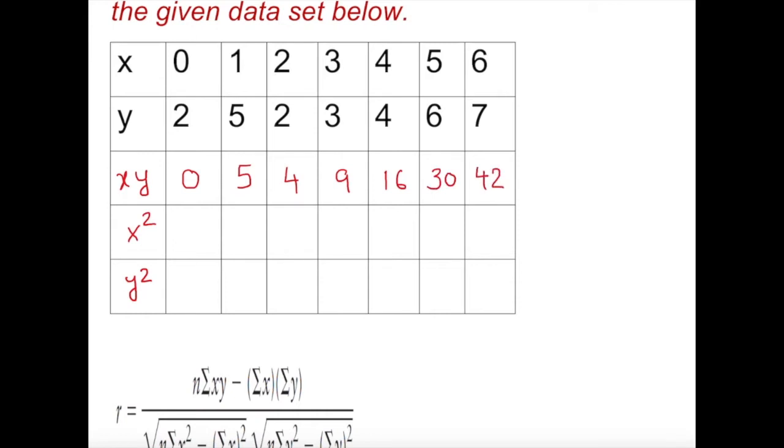So x squared. Notice that x squared means we are going to square that. We cannot add before we square. So we must square, then we add. So x squared: 0 squared, 1 squared, 2 squared, 3 squared, 4 squared and so on. So we do 0 squared is 0, 1 squared is 1, 2 squared is 4, 3 squared is 9, 4 squared is 16, 5 squared is 25, and 6 squared is 36.